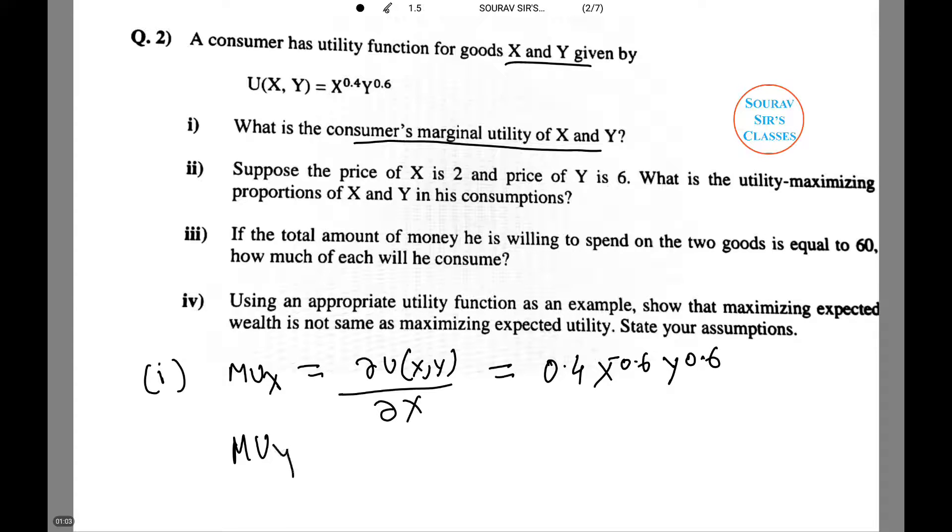Similarly, for marginal utility of Y we have del U(X,Y) by del Y, which equals 0.6 X to the power 0.4 Y to the power -0.4. Now let us see the second question.